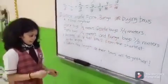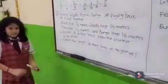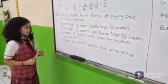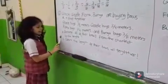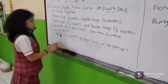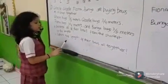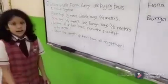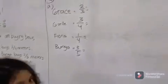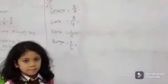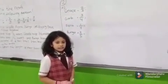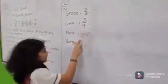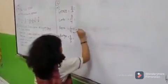Now, the second question. Part A: arrange all of their bows from the shortest to the longest. Part B: count the length of their bows all together. Let's start with part A. Like we did in step one, let's make the denominators the same — a number that can divide three, four, and five. And the number is sixty.